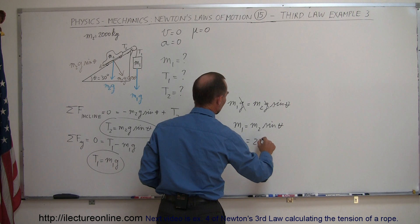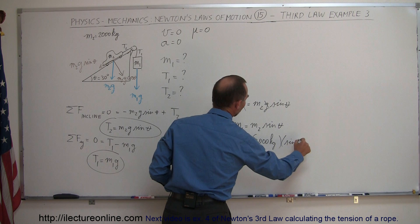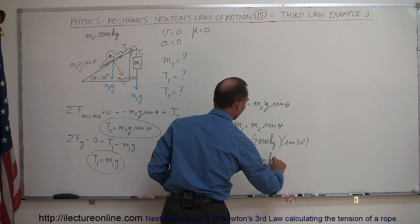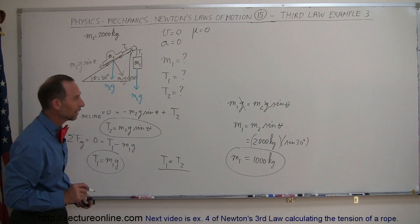And M2 is 2,000 kilograms sine of 30 degrees, which is one-half. And so this is equal to 1,000 kilograms, which is the mass required to keep the car from rolling downward.